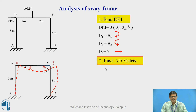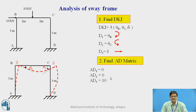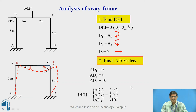Then let us find the Ad matrix. Ad is the action force in the direction of deformations. In the original structure, we do not have any force in the direction of θB, we do not have any force in the direction of θC. However, we have a force in the direction of sway that is 10 kilonewton. Therefore, Ad1 will be 0, Ad2 will be 0, and Ad3 is present and positive because it is in the direction of sway. So the Ad matrix is developed.